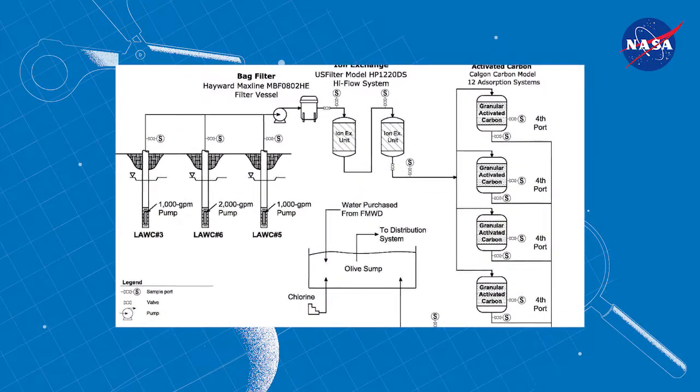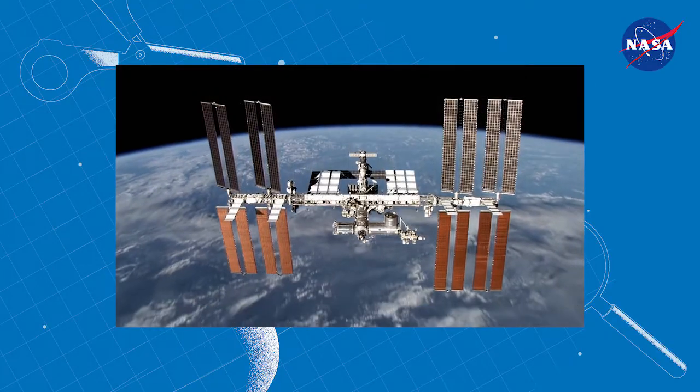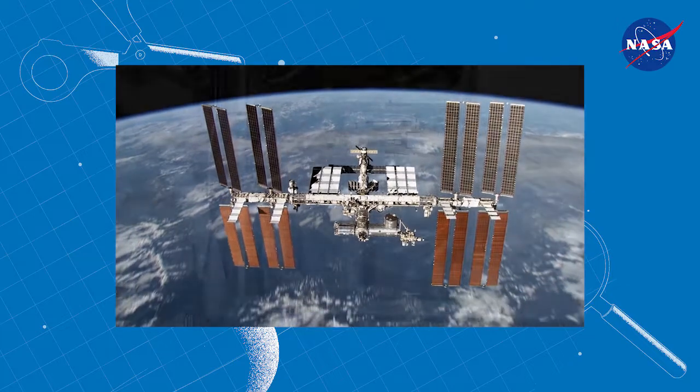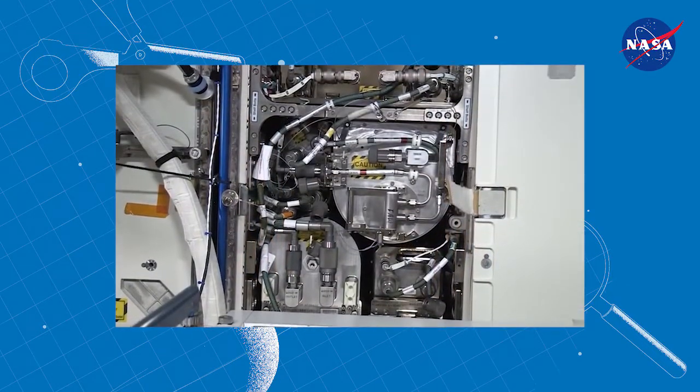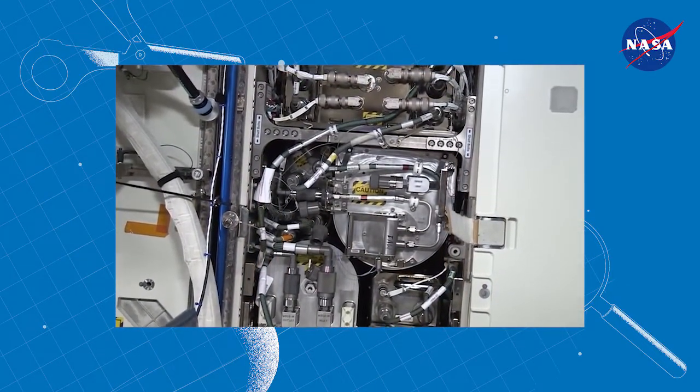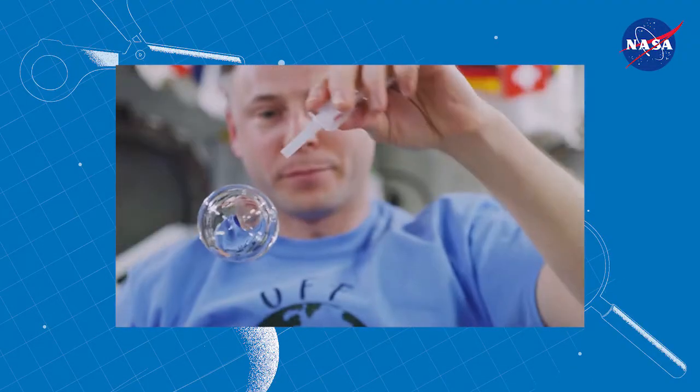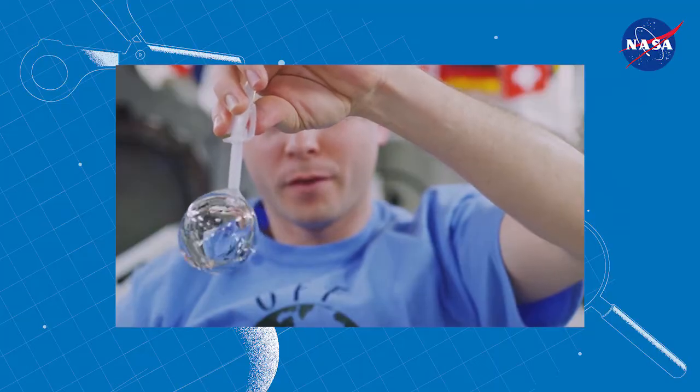There is also a need for water filtration systems beyond Earth, like for astronauts on the International Space Station. The water recovery system provides clean water by reclaiming wastewater, including water from crew member urine, hand washing, and teeth brushing, then filtering it to reuse as clean water.